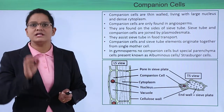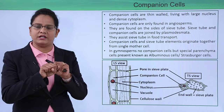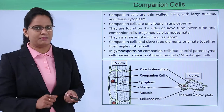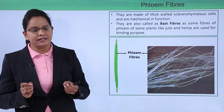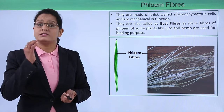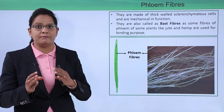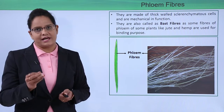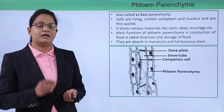Companion cells are a characteristic feature of angiosperms. In gymnosperms, the equivalent cells are called albuminous cells or Strasburger cells. Companion cells and sieve tube members originate from a single mother cell. The next type of cell is phloem fibers — just like xylem fibers, they are sclerenchymatous, meaning they are mechanical in function. They are also known as bast fibers. Some phloem fibers found on the outer side are used commercially, as in jute and hemp.